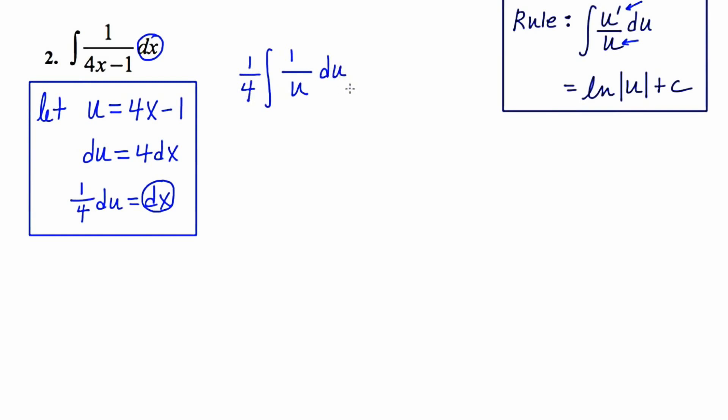Now this is form-fitting with our rule over to the right. We have an expression u in the denominator, and its derivative occurs in the numerator. For that reason, we can apply the rule and say that our answer is 1 fourth, the natural log of the absolute value of our denominator, which in this case is u, plus c.